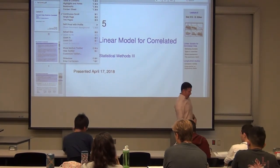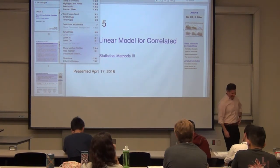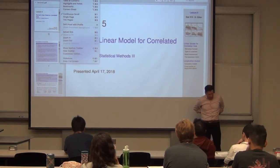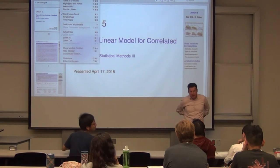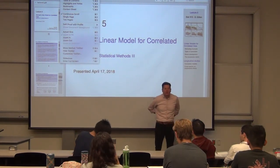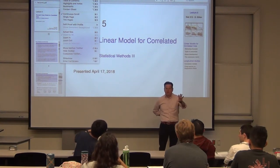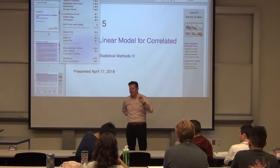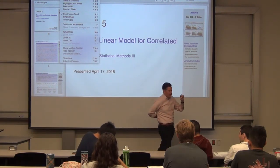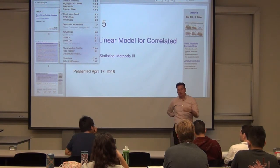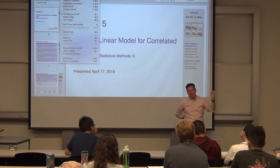Could we bootstrap only the cheese in the sandwich estimator? You could bootstrap the entire procedure. Take the beetles example — I could resample those jars with replacement, do that 500 times, build a bootstrap sample, refit my model on each bootstrap sample to get a beta-hat, and then take the empirical variance of those beta-hats. That would be the bootstrap variance. It wouldn't work very well though, because you're resampling only ten observations.